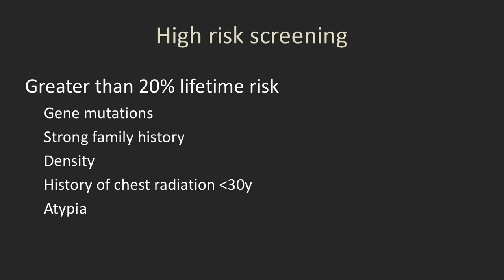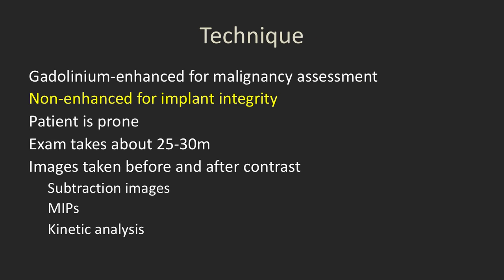Who should you consider referring for breast MRI for high-risk screening? MRI is greater than 95 percent — some say as high as 98 percent — sensitive for detecting cancer in high-risk patients. Those with greater than 20 percent lifetime risk, either on the basis of gene mutations, strong family history, some combination of family history and density, chest radiation under age 30, or history of atypia should be considered. When looking for malignancy we give gadolinium; for implant rupture we don't. The patient lies prone, breasts in a special coil, the exam takes about 25-30 minutes, and we acquire images before and after contrast including subtraction images, maximum intensity projections, and kinetic analysis.